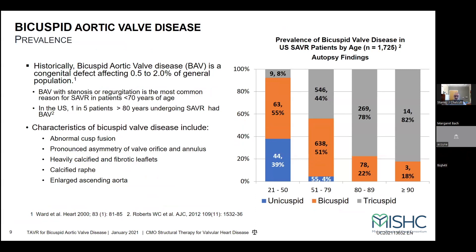Bicuspid aortic valve disease is a congenital abnormality that affects 0.5 to 2% of the general population in the U.S. Bicuspid aortic valve with stenosis or regurgitation is the most common reason for SAVR in patients under the age of 70. In the U.S., even over 80 years old, 20% of patients — or 1 in 5 — undergoing SAVR have a bicuspid anatomy. The characteristics we should be primed for include abnormal cusp fusion, a pronounced asymmetry of the valve orifice. When you look down the pedal, you see it's not symmetrical. They tend to be more calcified and fibrotic, and they may have raffae.